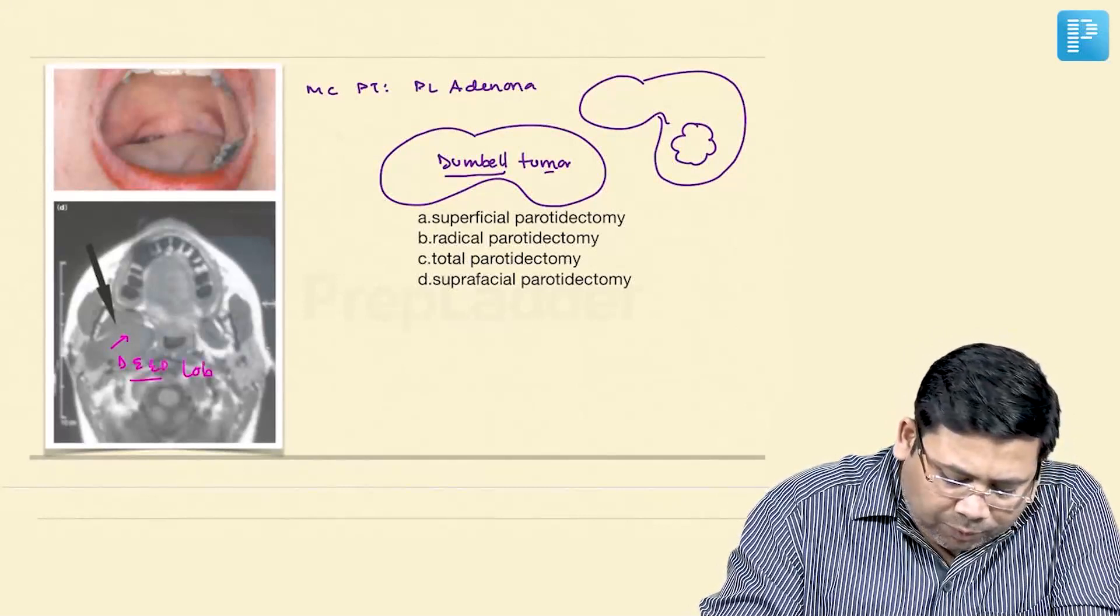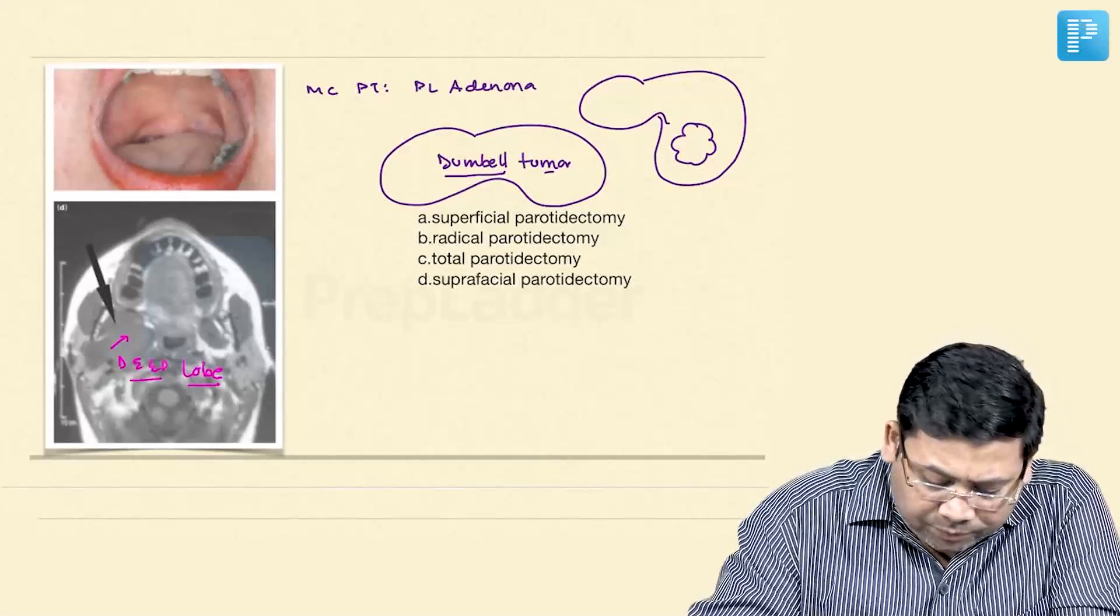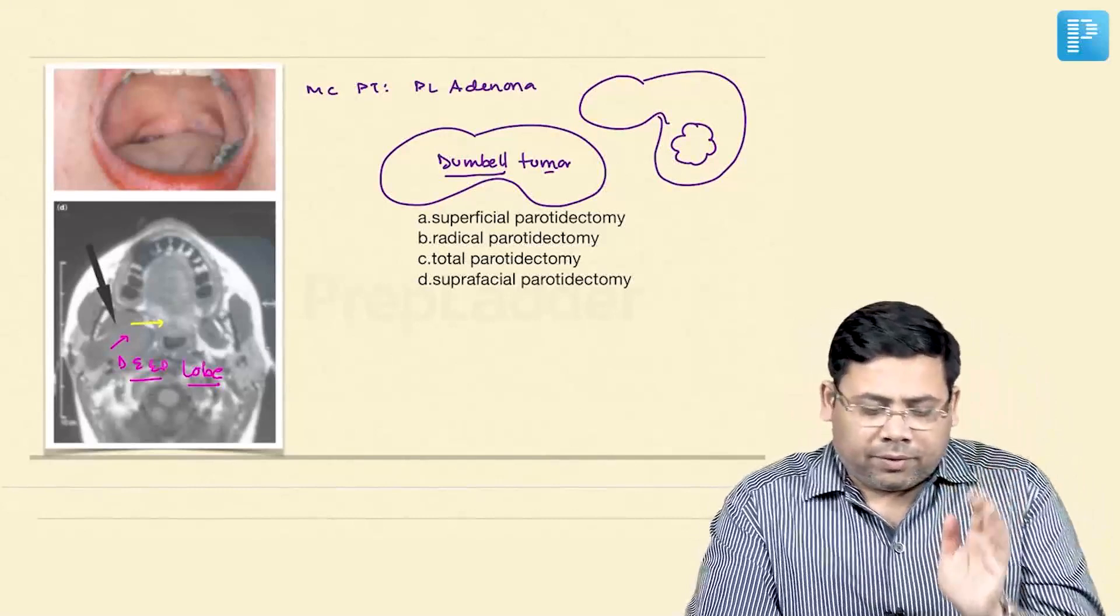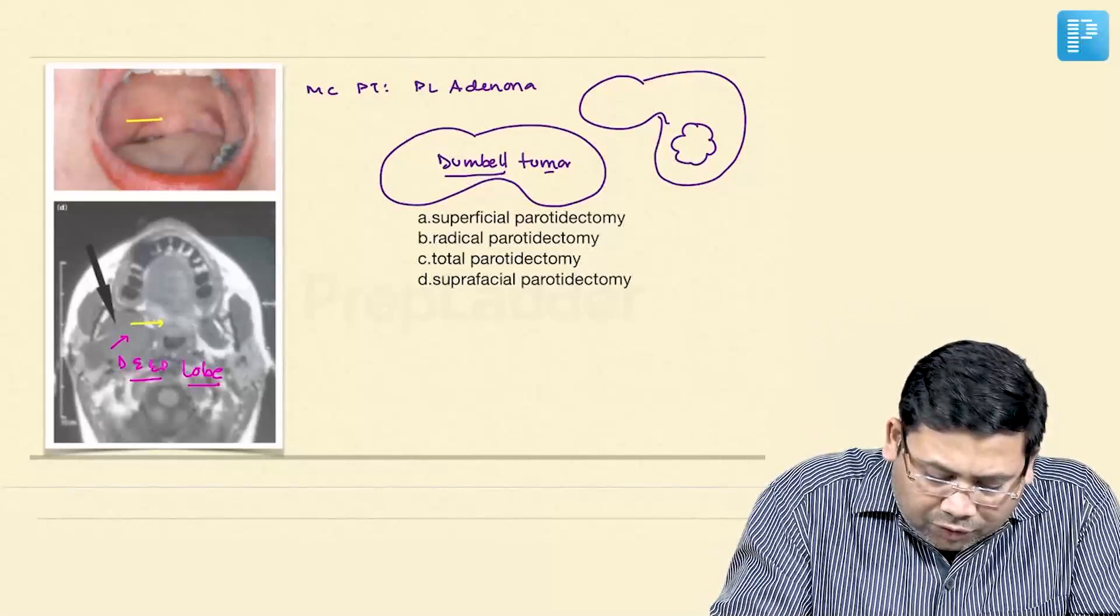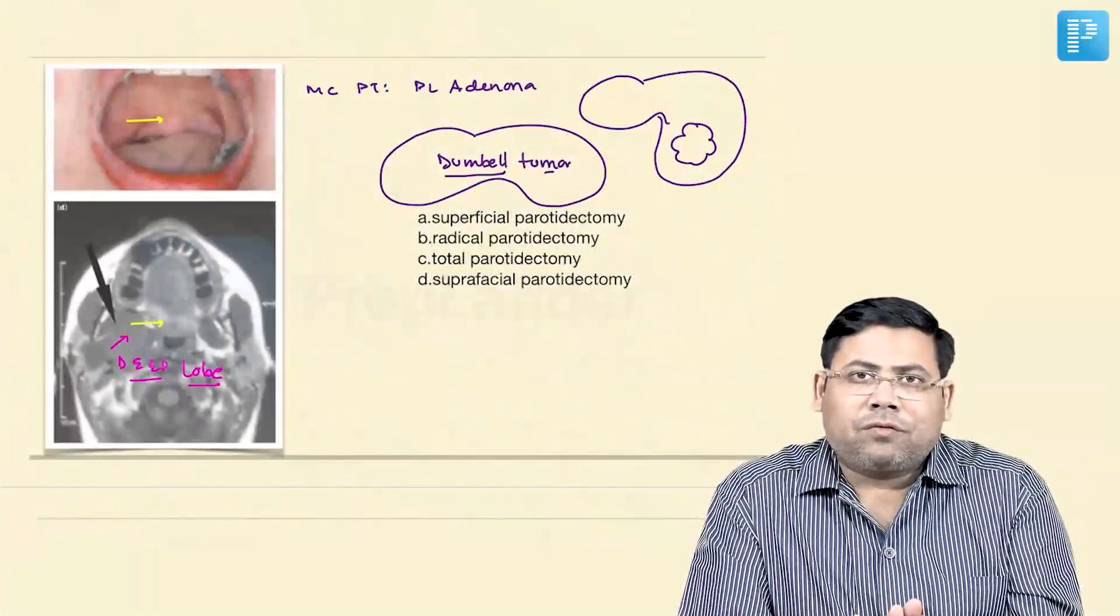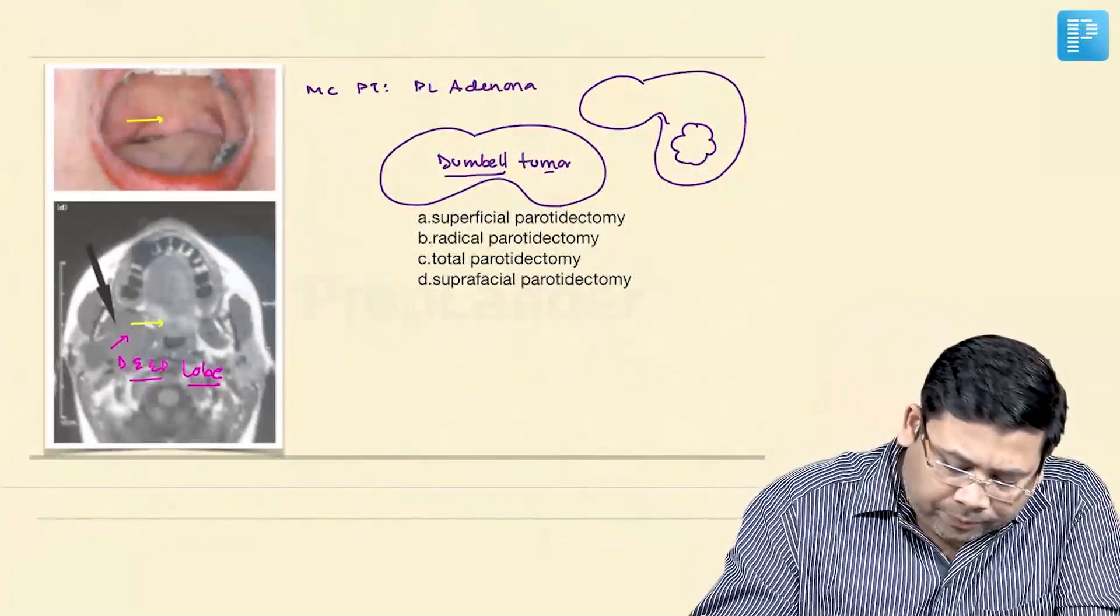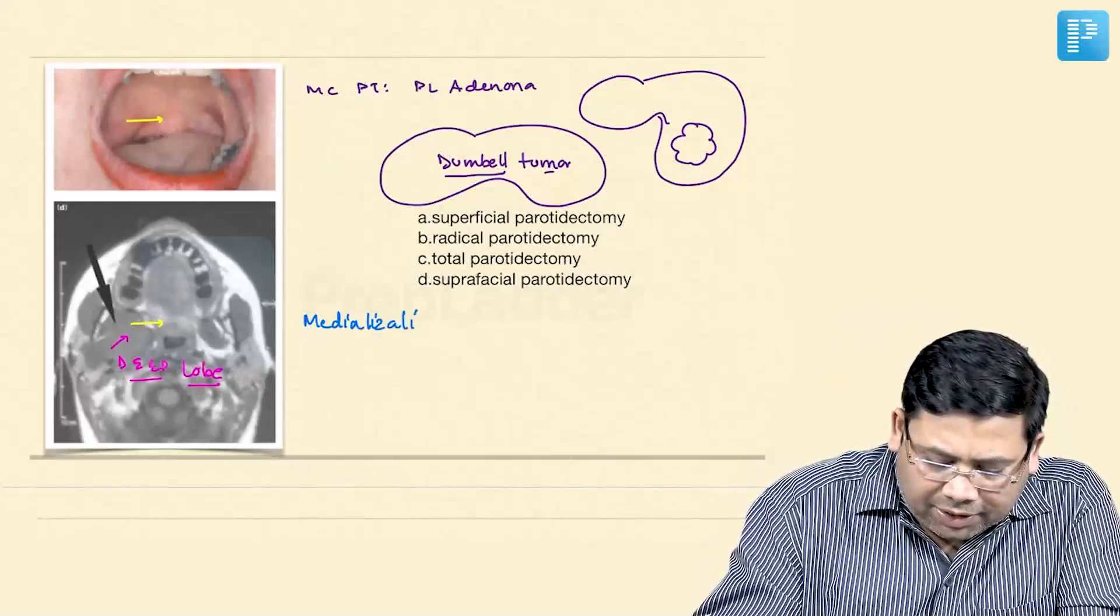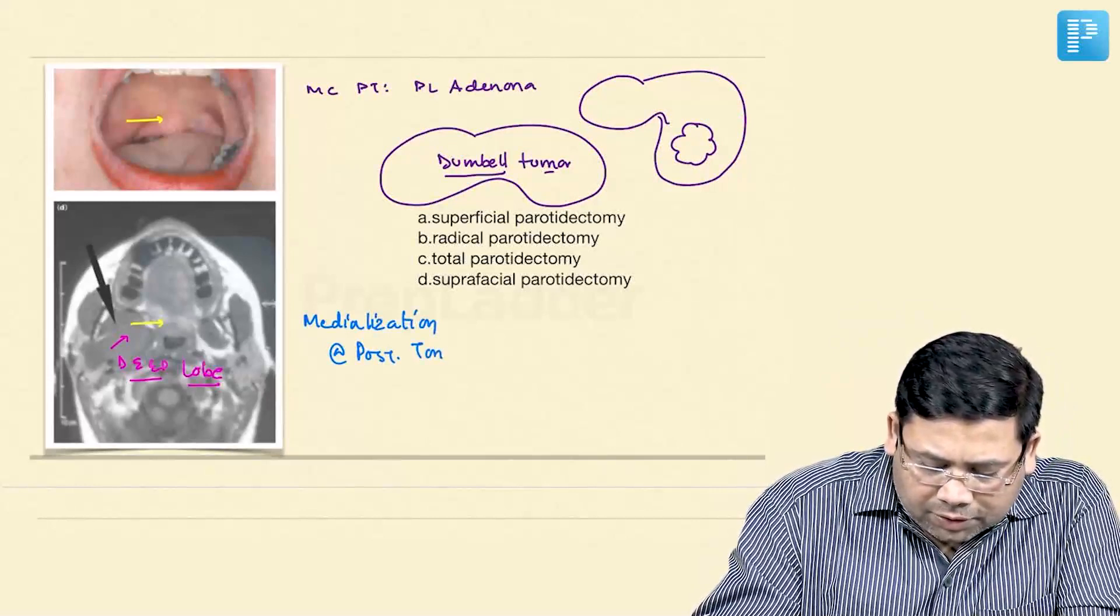When we talk about deep lobe tumor, one very important thing is medialization of the posterior tonsillar pillar. If you see here, the uvula has gone a bit lateral and there is medialization of the posterior tonsillar pillar. So what is the most common clinical end? It is medialization of the posterior tonsillar pillar.